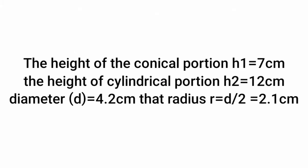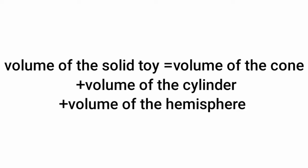In the problem, given that: let height of the conical portion h1 equals 7 cm, the height of cylindrical portion h2 equals 12 cm, and diameter d equals 4.2 cm. That is, radius r equals 2.1 cm. Volume of the solid toy equals volume of the cone plus volume of the cylinder plus volume of the hemisphere.